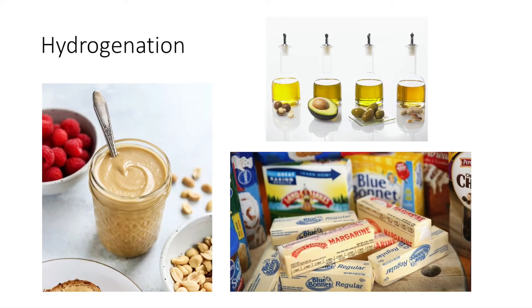Hydrogenation is used in the food industry to convert polyunsaturated vegetable oils into saturated oils. For example, the production of peanut butter is through partial hydrogenation. Solid cooking shortenings and stick margarines are also products of partial hydrogenation.